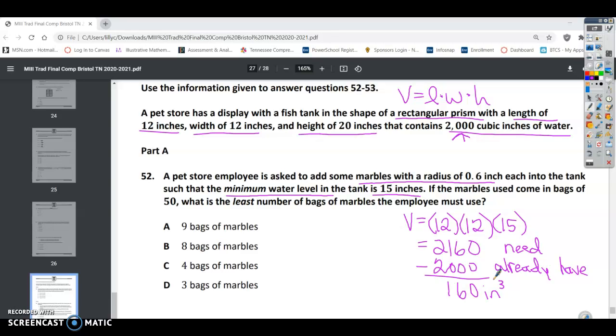Let's see what the marbles are going to do. A marble is round, so it's a sphere. The volume formula for a sphere is 4/3 π r³. Let's check to see how much volume one marble will take up. Volume equals 4/3 π times our radius 0.6 cubed.